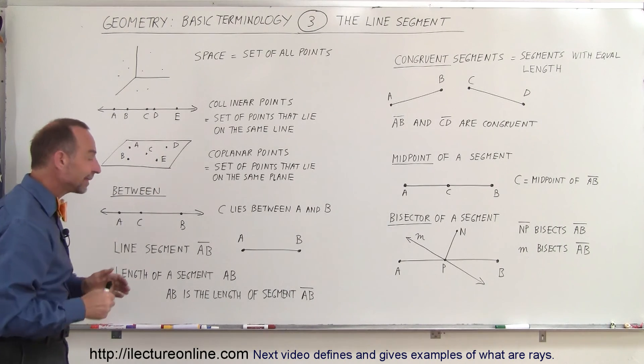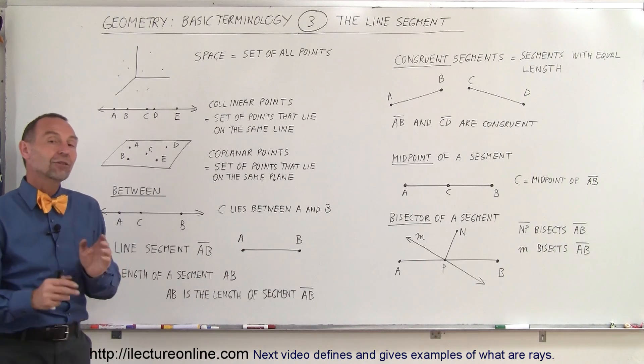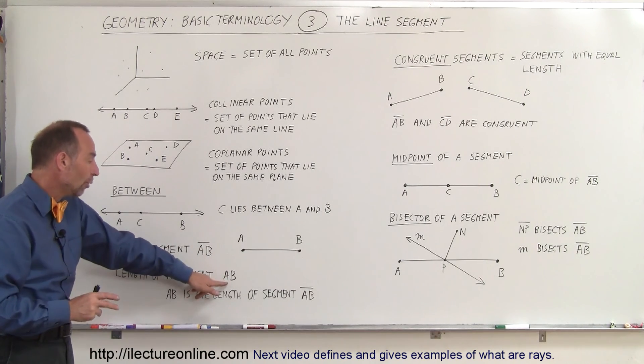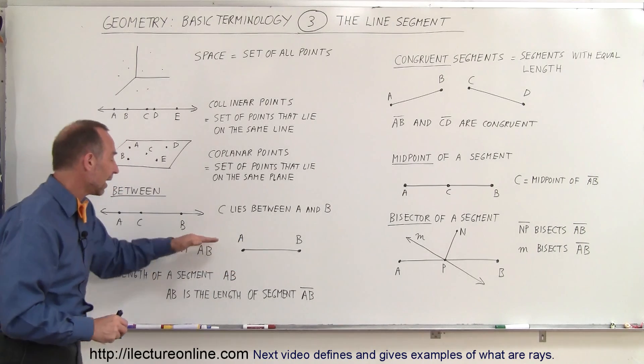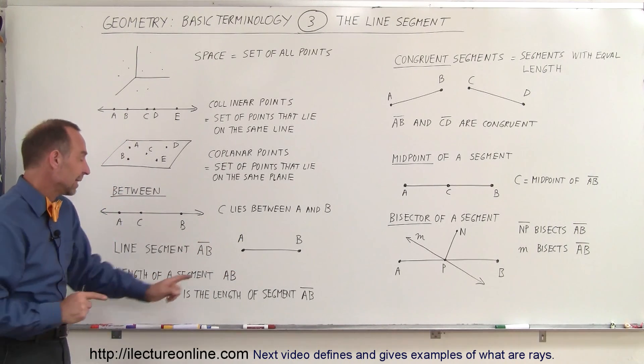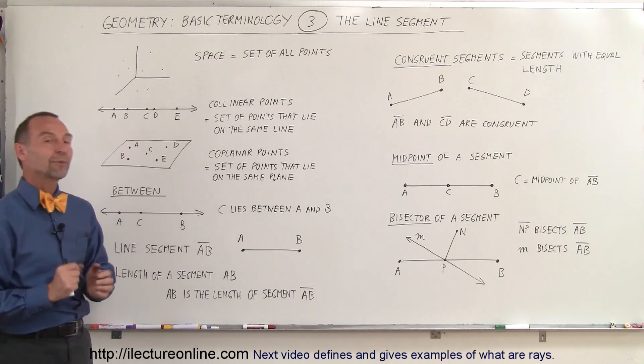We can also talk about the length of the segment. The line segment is AB with a line over it. The length of that segment AB is simply the length of that segment without the little line on top of A and B.